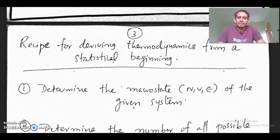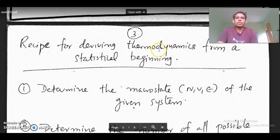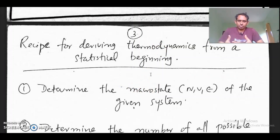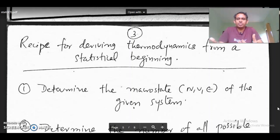Hi everybody. Welcome back again to the classes on Statistical Mechanics. In the few classes we saw earlier, we have seen several important equations regarding Statistical Mechanics. Now, we have a recipe for deriving thermodynamic properties from a statistical beginning. Just as when we prepare a dish, there are certain ingredients and steps to follow — that is the recipe. Here we have a recipe for deriving the properties of a system using statistical mechanics.